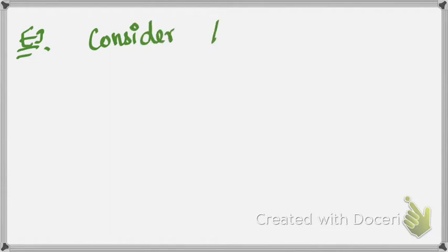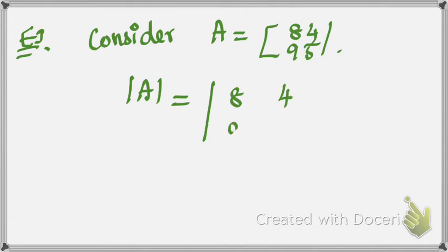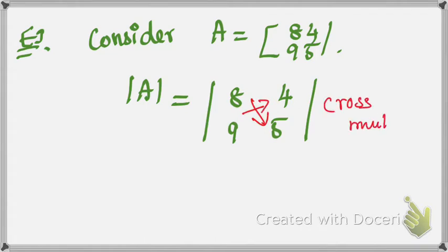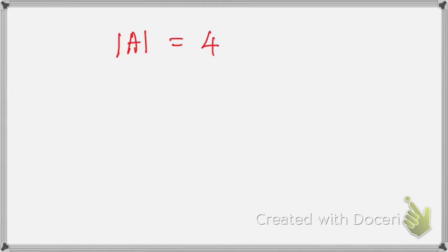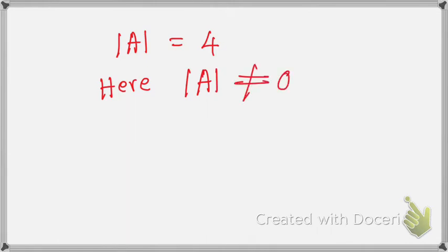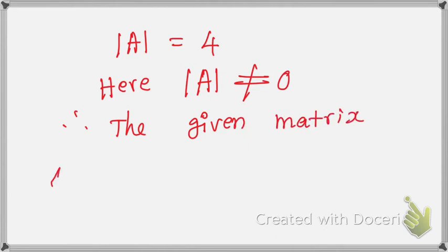Example: consider A equal to the matrix [8, 4; 9, 5]. The determinant of A is 8×5 minus 4×9, that is 40 minus 36, equal to 4. So the determinant value of A equals 4. Therefore, the given matrix is a non-singular matrix.